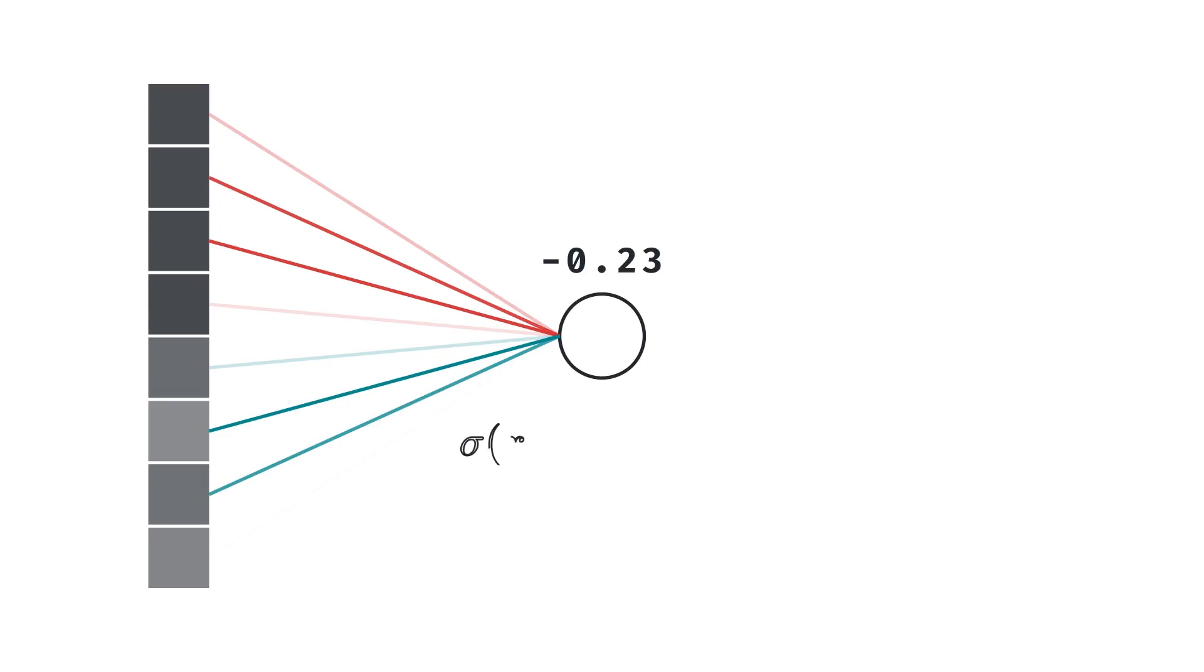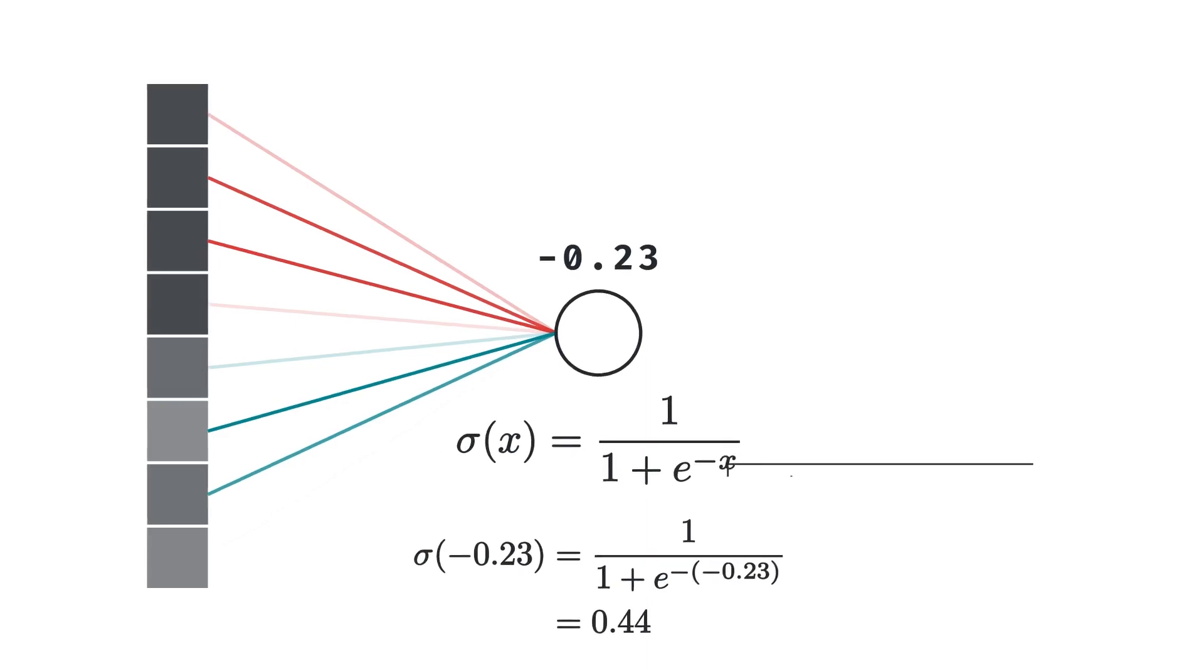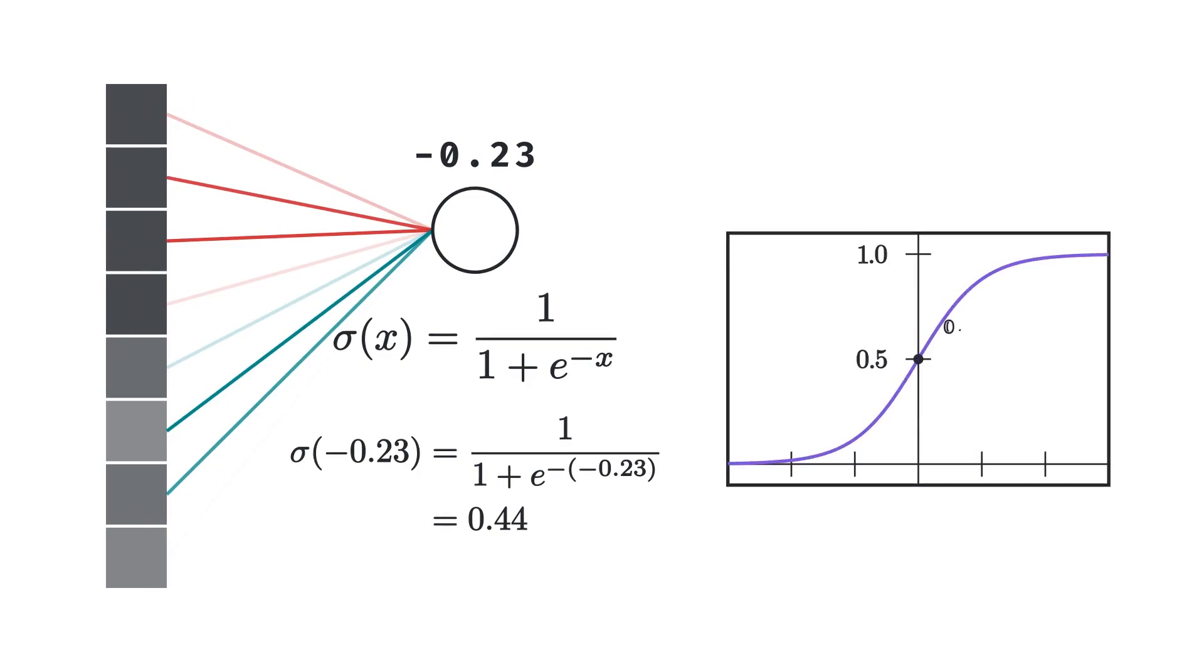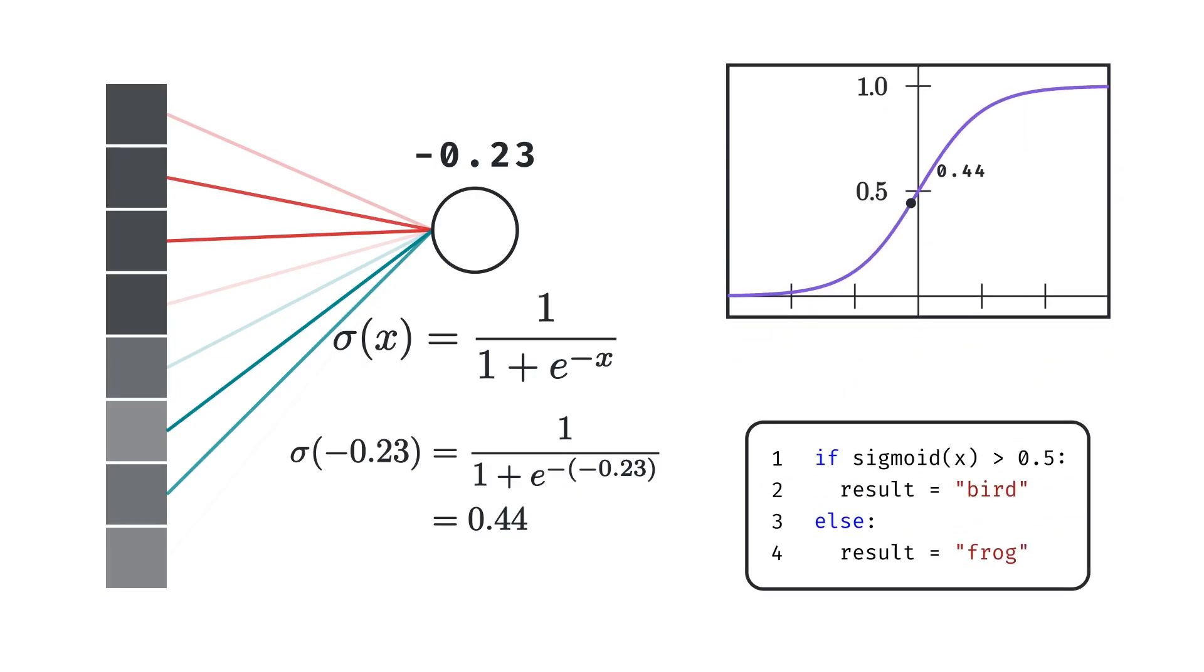And so, then the sum is passed into some non-linearity. In this case, the sigmoid function, which squishes our output into a range of 0 to 1, which can be interpreted as a probability. Then, we can say that if the network outputs a value greater than 0.5, then it's a cat, else it's a dog. By the way, what we've just implemented is logistic regression interpreted as a single unit neural network.